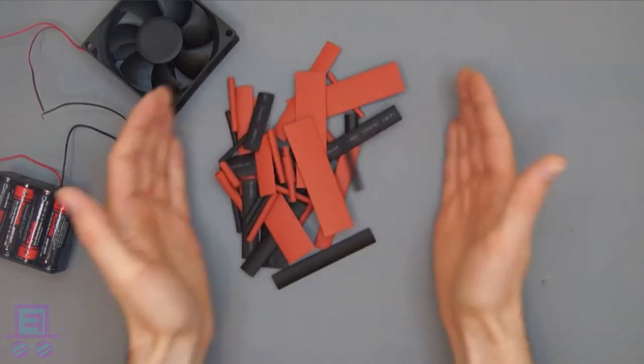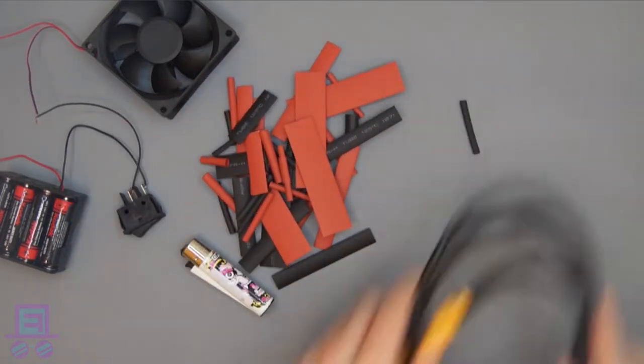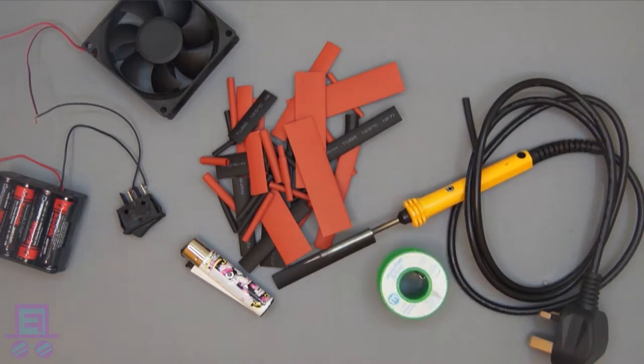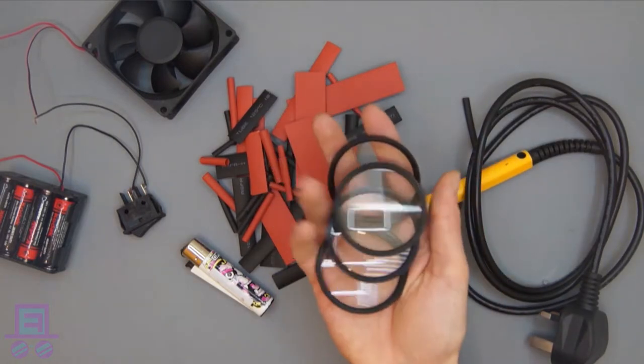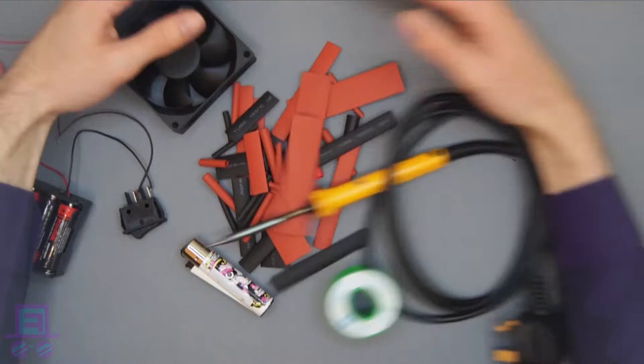For this tutorial, the bare minimum we will need is something to solder, in this case last week's fan project, some shrink wrap tubing, a lighter, a soldering iron, and some solder, as well as a set of 55mm macro lenses if you're making this for a YouTube series.